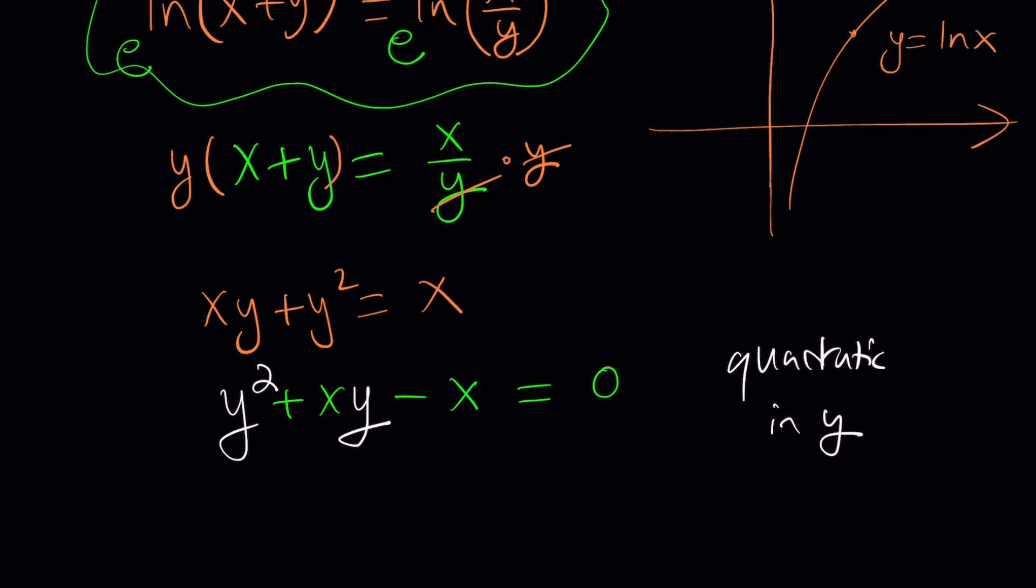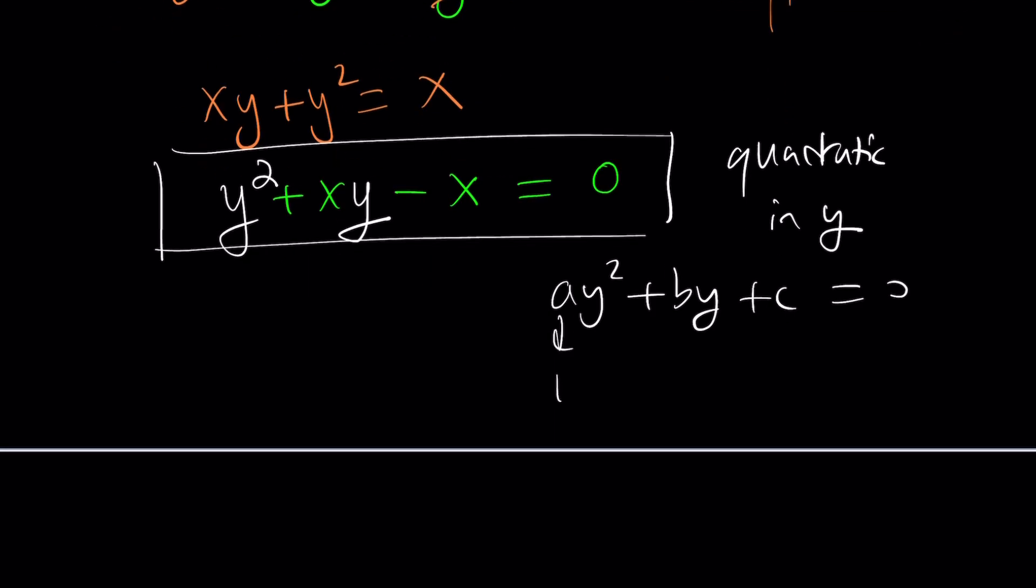Notice that this is quadratic in y. And you're like, why? Because it is quadratic. As you can see, ay^2 + by + c is quadratic in y. In this case, a is 1, b is x, which is kind of weird, but we're going to take x as a constant, sort of. And c is negative x. So those are going to be our coefficients.